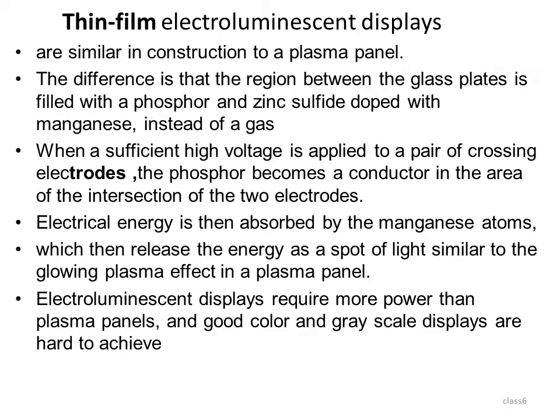The thin film electroluminescent display has a similar construction to the plasma panel, but the difference is that instead of neon gas, phosphorous — which is zinc sulfide doped with manganese — is used. When sufficient voltage is applied to a pair of crossing electrodes, the phosphorous becomes a conductor in the area of intersection of the two electrodes. Electric energy is then absorbed by the manganese atoms, and when they release energy, a spot of light similar to the glowing plasma effect in a plasma panel is produced. Electroluminescent displays require more power than a plasma panel, and good color and gray scale displays are hard to achieve.